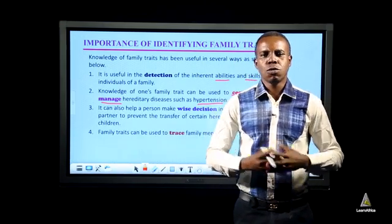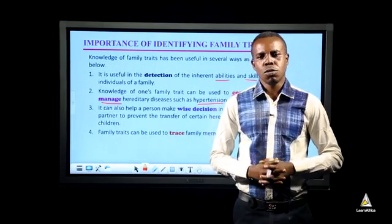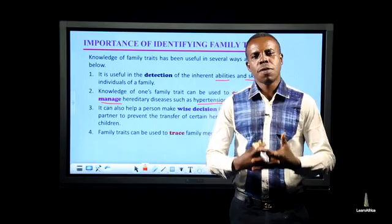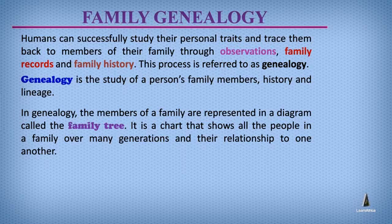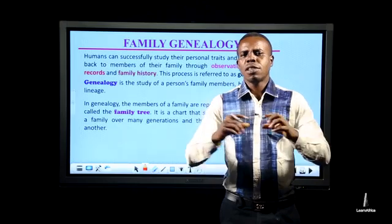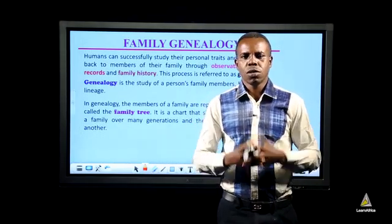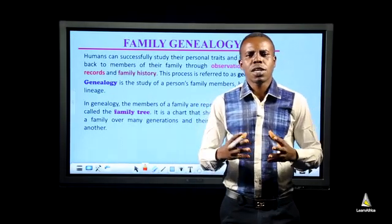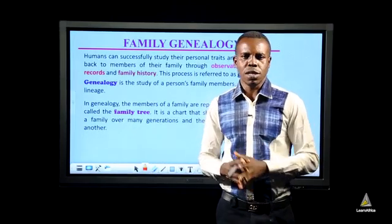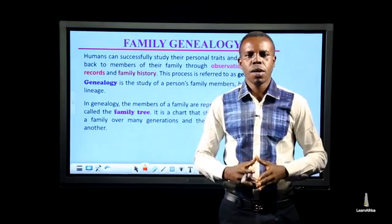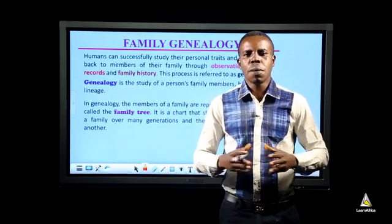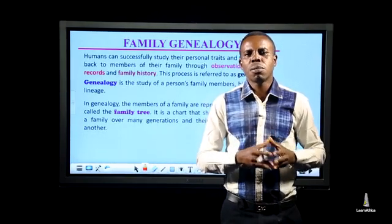Traits are inherited from parents to children, and this knowledge can be used to trace family genealogy. Human traits are passed from parents to offspring, and these traits can be traced to older members of a family through observation, family records, and history. This entire process is known as genealogy. Genealogy can be defined as the study of one's family history and lineage. Through genealogy, one can know certain traits that run through a family. In genealogy, a diagram is used to show different members of a family. The name of this diagram is known as the family tree.